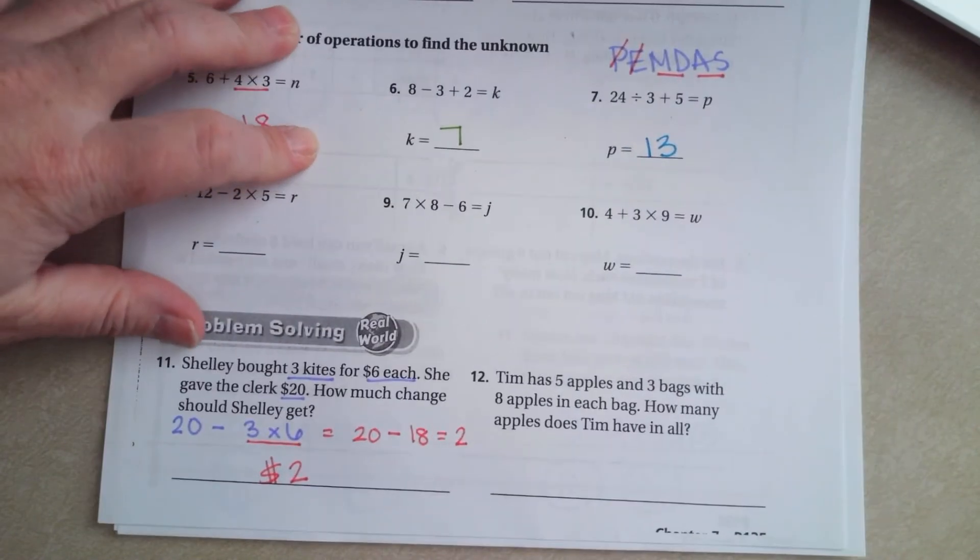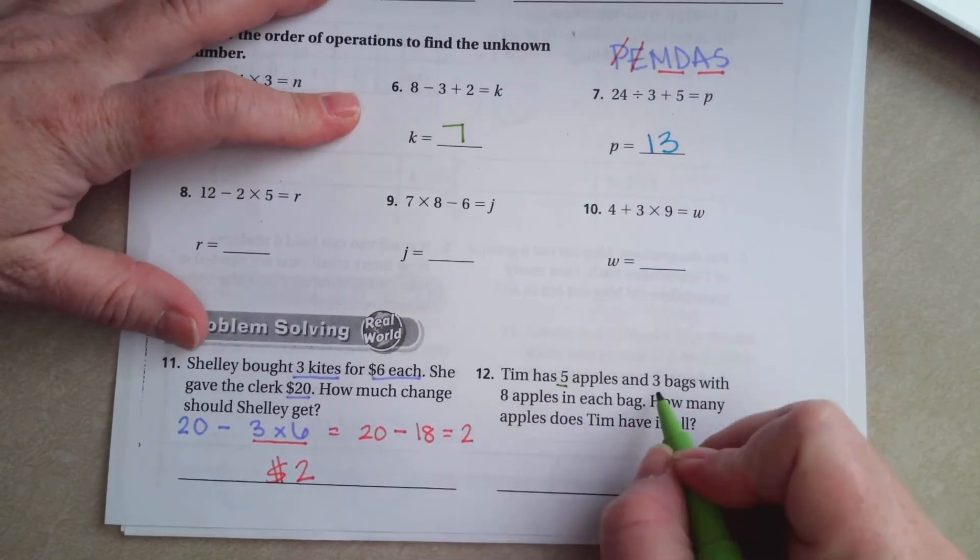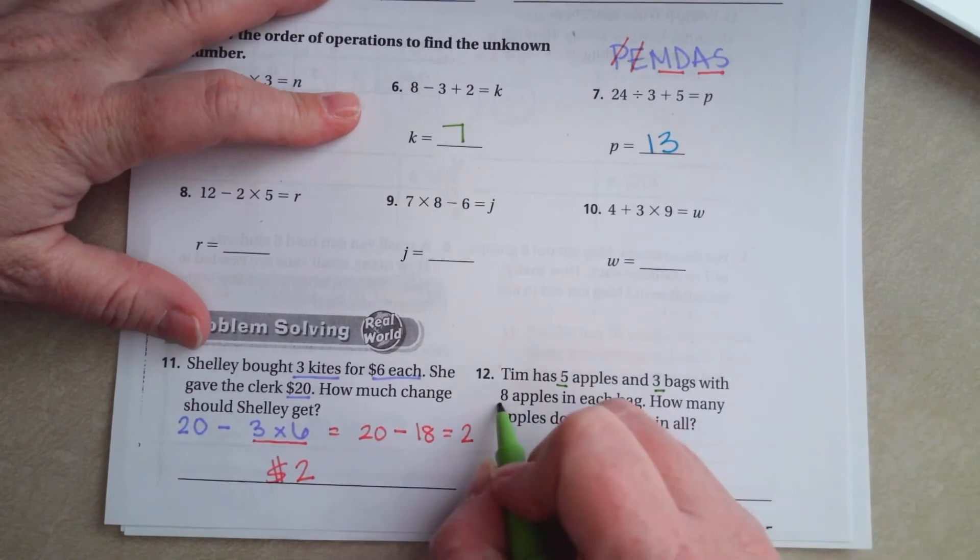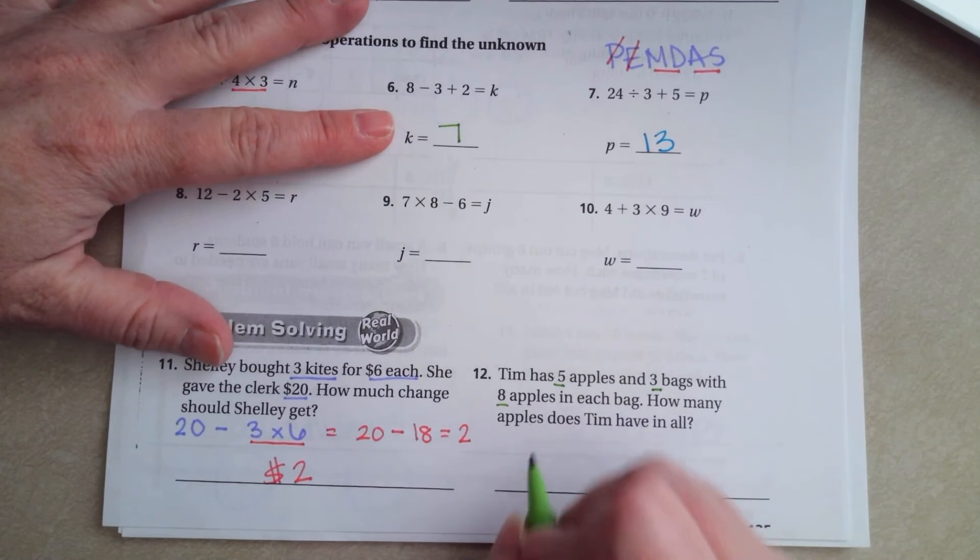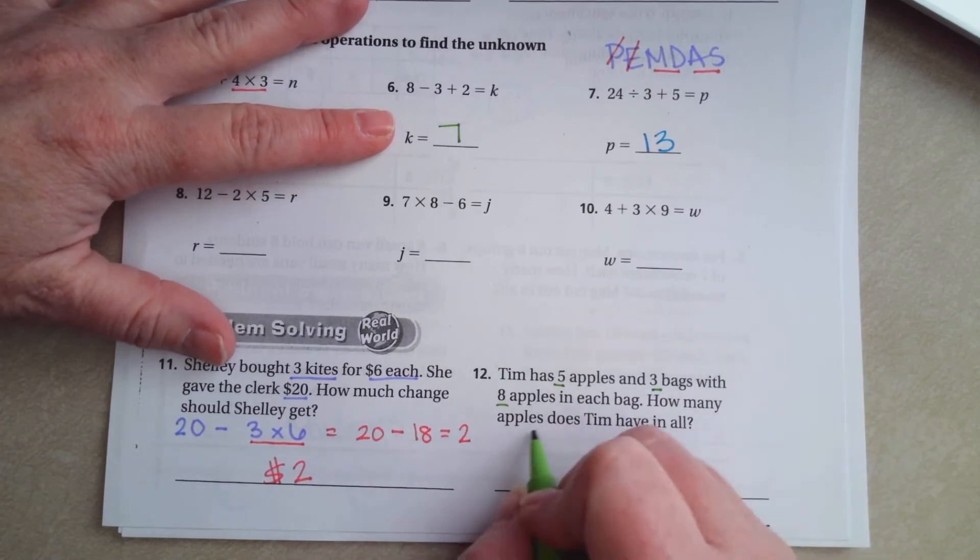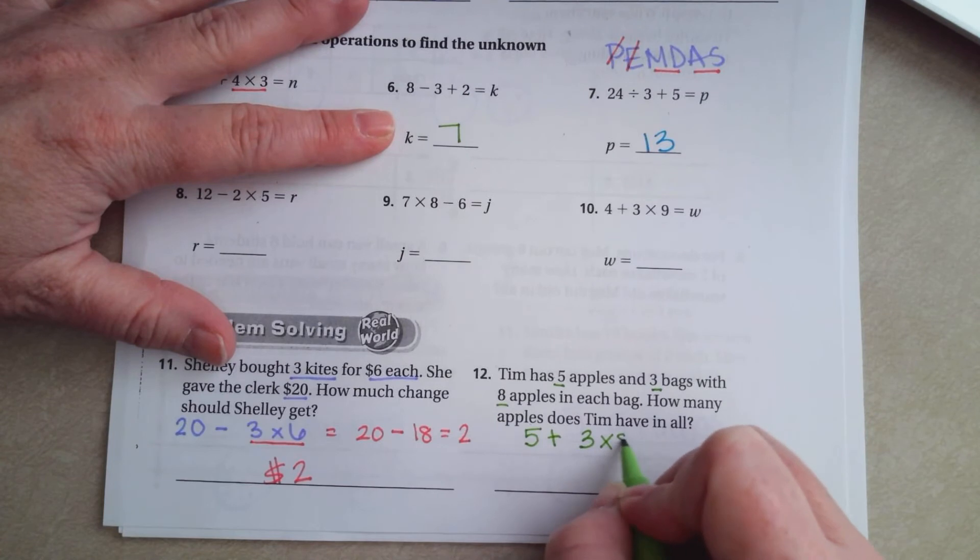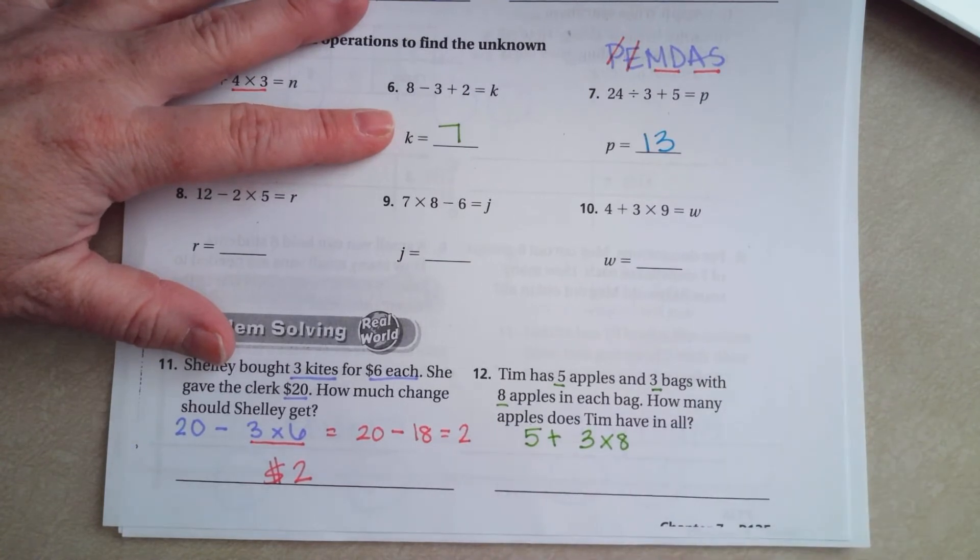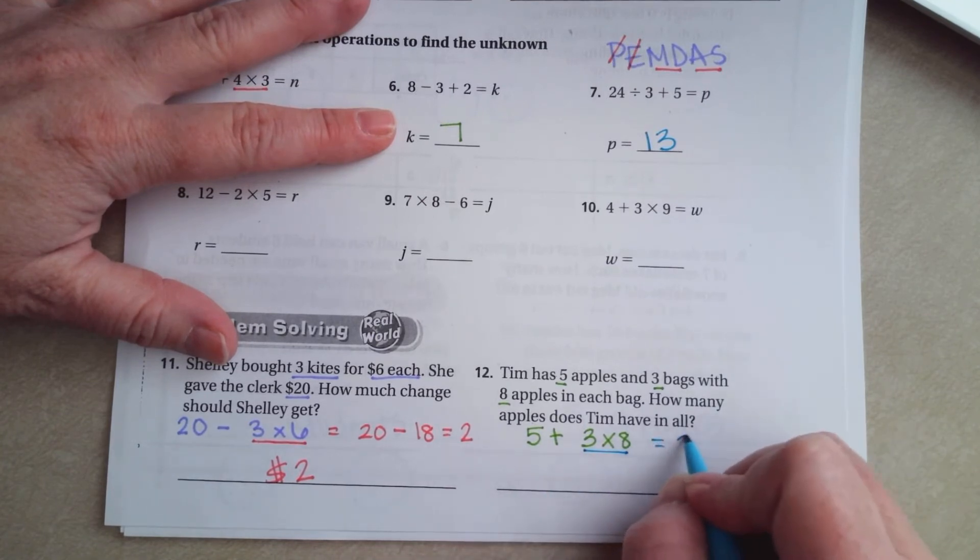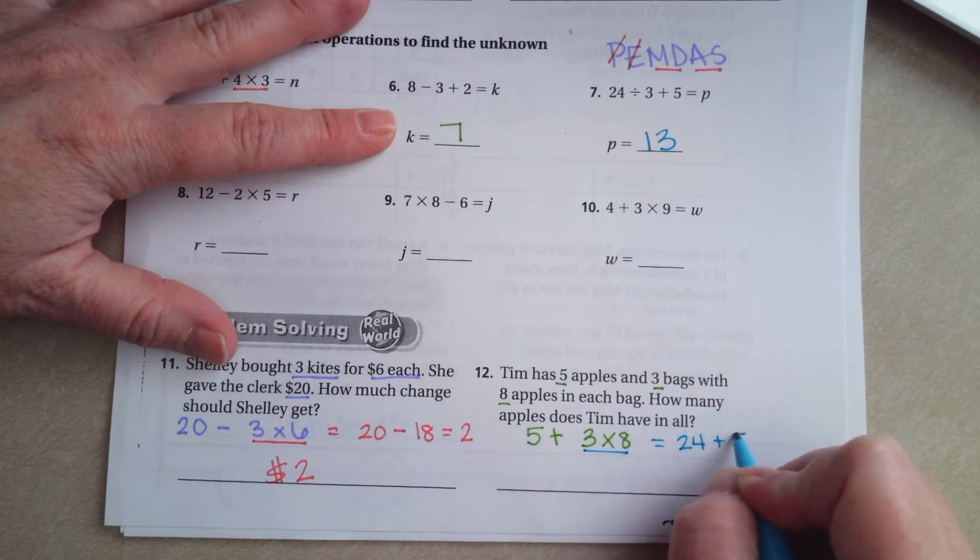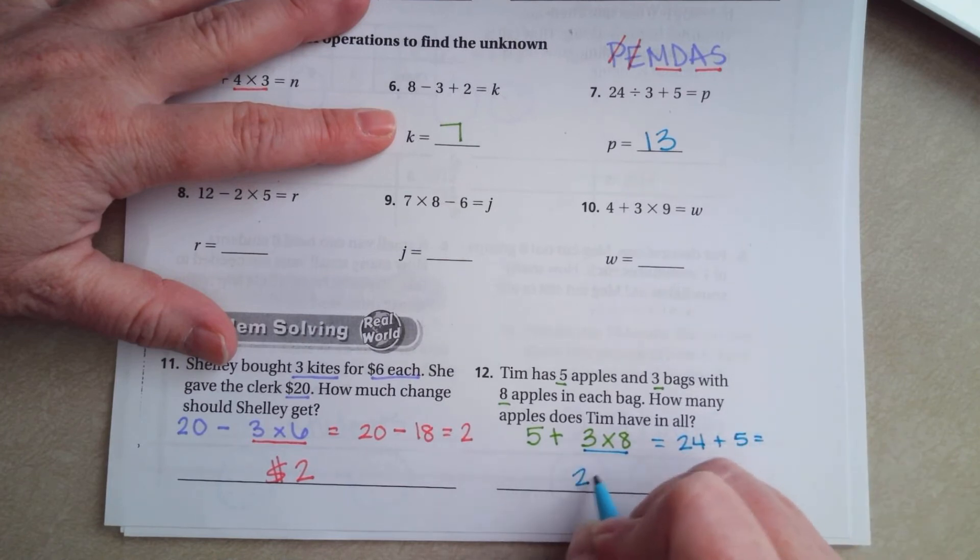Tim has 5 apples and 3 bags with 8 apples in them. How many apples does Tim have in all? So he has 5 apples plus 3 bags that each have 8 apples in them. So order of operations. 8 times 3 first. That's 24 plus 5 more. That's 29 apples.